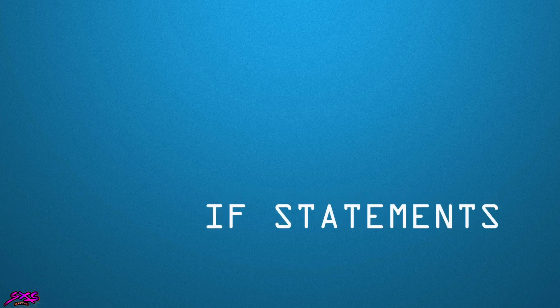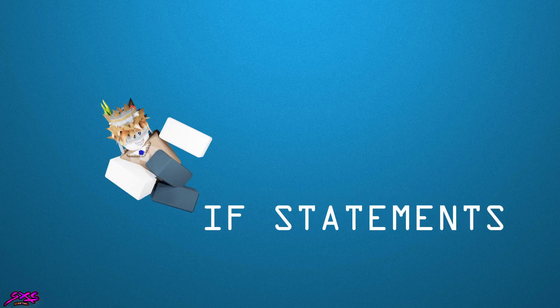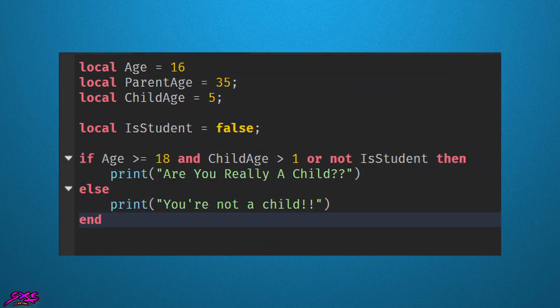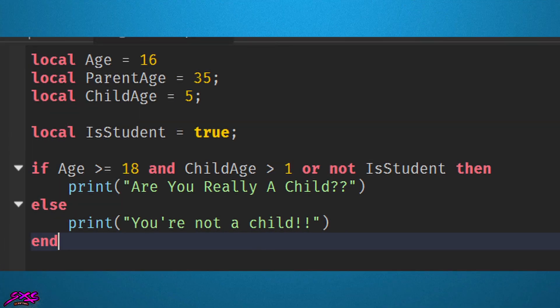To wrap up this video: conditional statements are an essential part of programming in Roblox, allowing you to execute different blocks of code depending on whether a condition is true or false. In this tutorial, we covered the basics of conditional statements in Roblox using the Luau programming language. Now for the challenge question — looking at this piece of code, what do you think it's going to print to the console? And after you solve that, what do you think will fire if I change this variable? Put your answer down below.